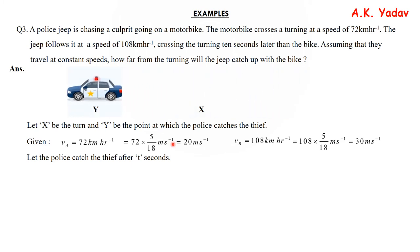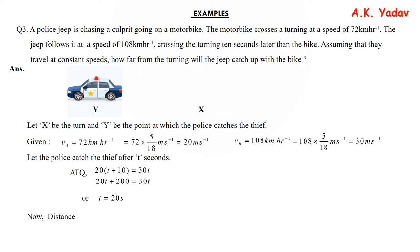Let the police catch the thief after t seconds. When the police catches the thief, both have covered the same distance from the turning. The police travels 30t meters, while the thief had 10 seconds more, so travels 20(t + 10) meters. Setting them equal and solving gives t = 20 seconds. Distance = 30 × 20 = 600 meters.